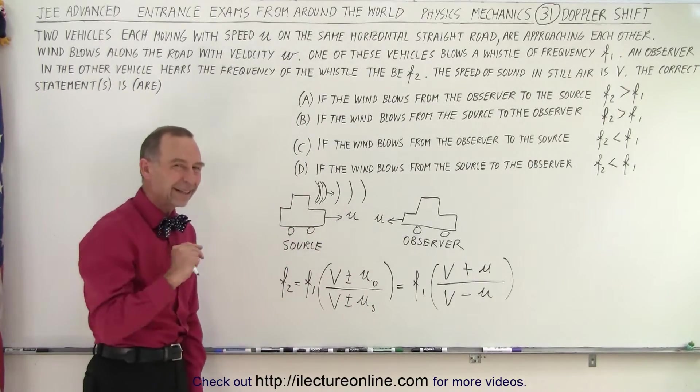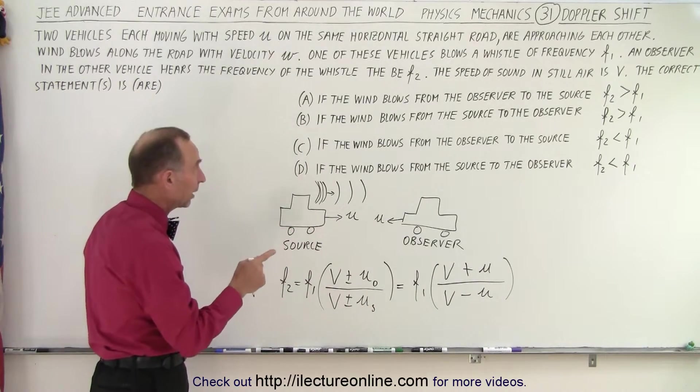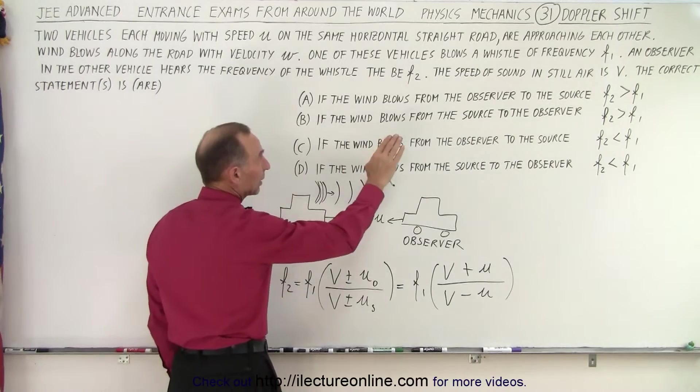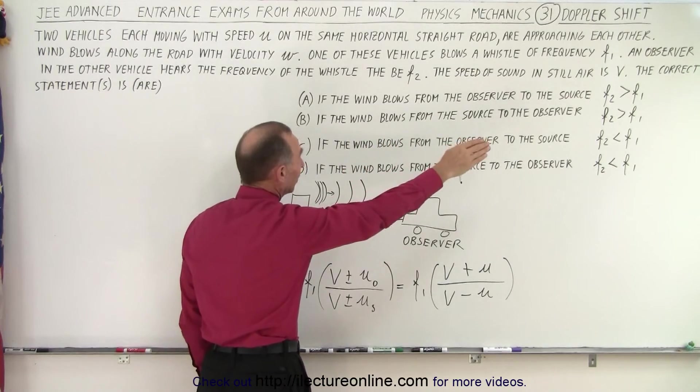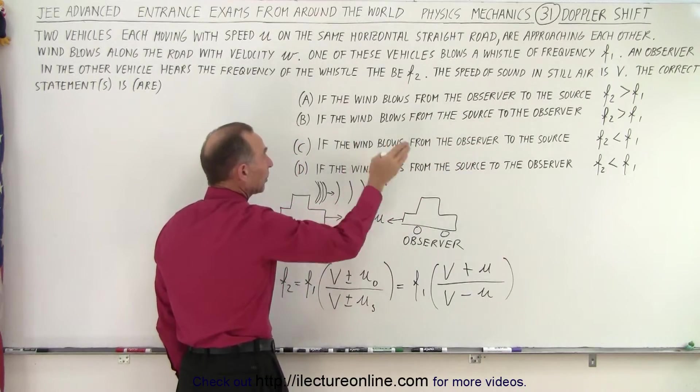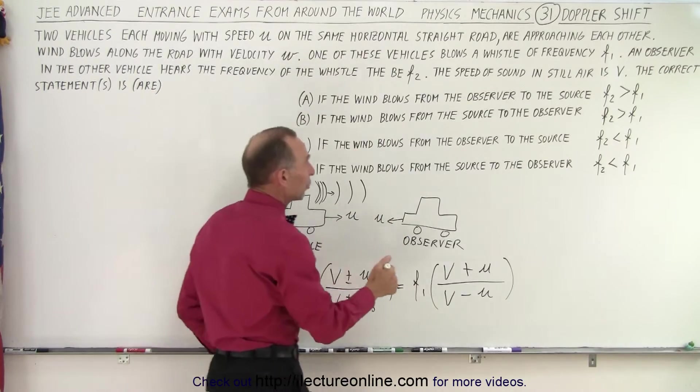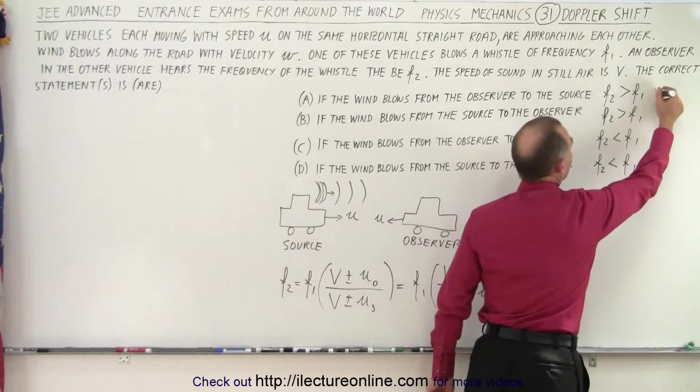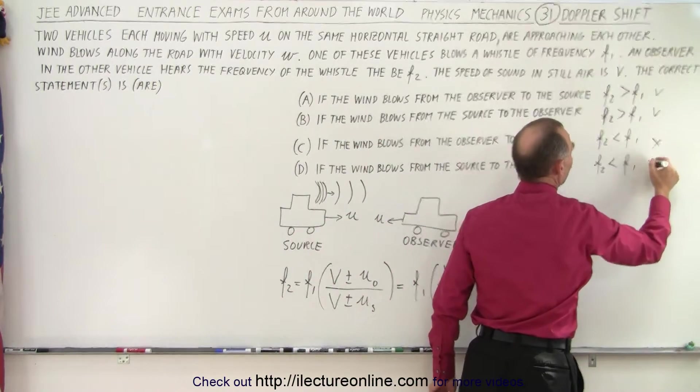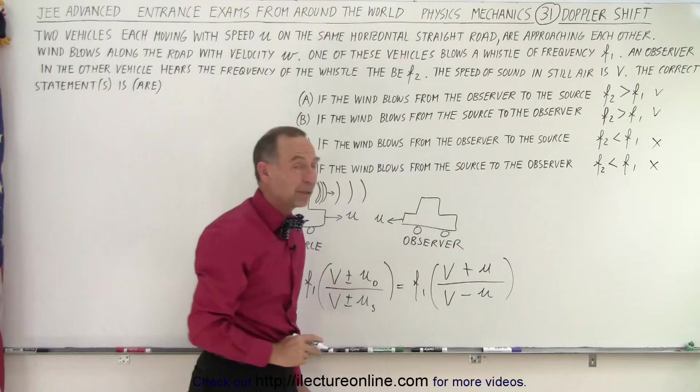That is of course in still air. Now in still air we realize that F2 will be larger than F1, and that will be the case regardless of, again in still air, that will always be the case. So we know that these two will be correct in still air and these have to be wrong in still air.